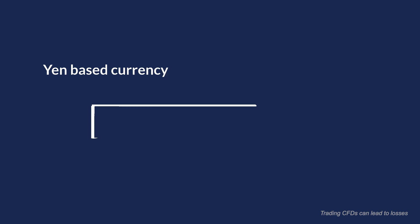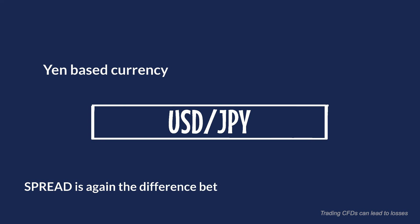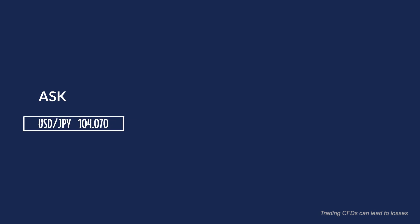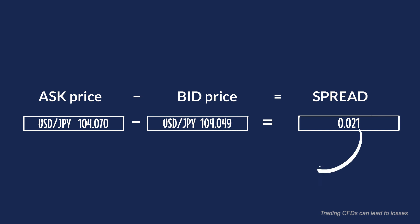For a yen-based currency like the US dollar to Japanese yen, the spread is again the difference between the ask and bid price. So if the US dollar to Japanese yen is trading with an ask price of 104.070 and a bid price of 104.049, then the spread will be 0.021, which equals 2.1 pips.